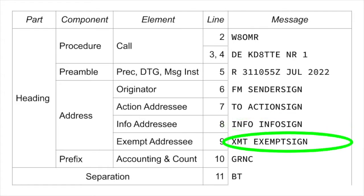Line 9 confuses a lot of people — it is an exempt addressee. If you have to send a message to a group, you can keep repeating lines 7 or 8 as needed.